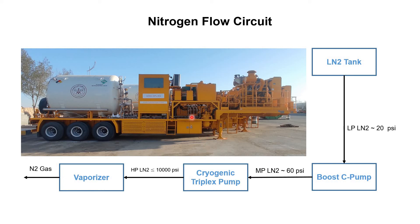Once the nitrogen enters this triplex pump, it will be pumped at high pressure. Depending upon the requirement, this pump has the capability to pump at approximately 10,000 psi. After the nitrogen discharges from this high pressure pump, it will enter to this vaporizer. In the vaporizer, this liquid nitrogen gets converted into nitrogen gas. Before the vaporizer, nitrogen is in liquid form; when it exits the vaporizer, it gets converted into gaseous form.